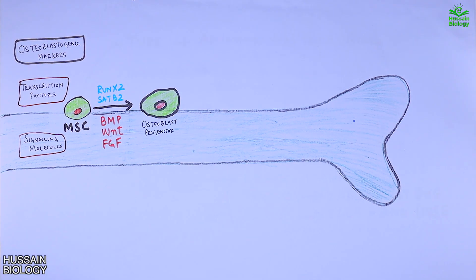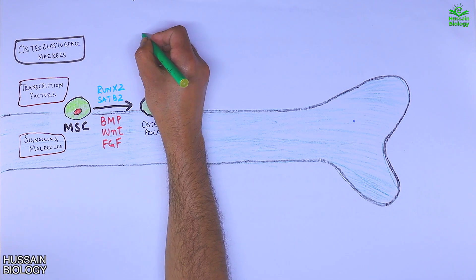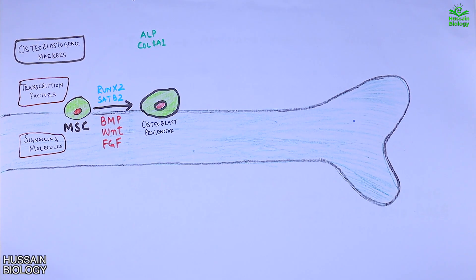The osteoblastogenic markers on the progenitor cell are ALP and COL1A1, both in low concentration.